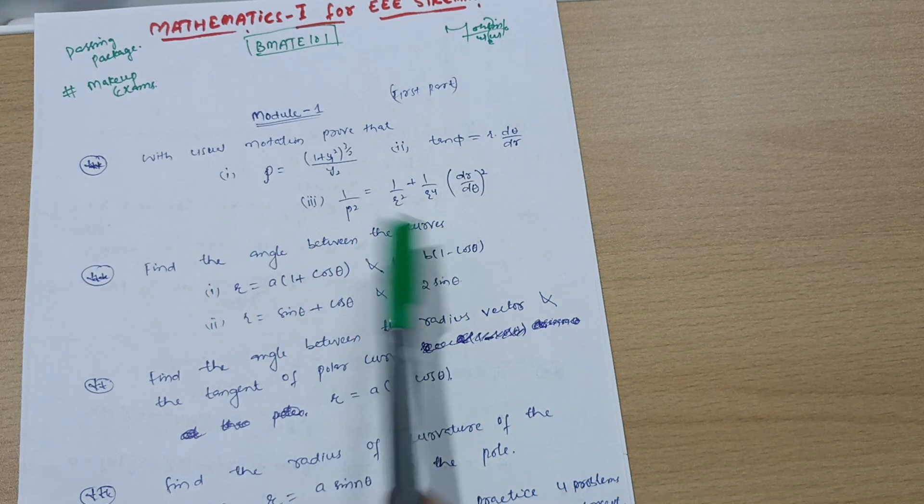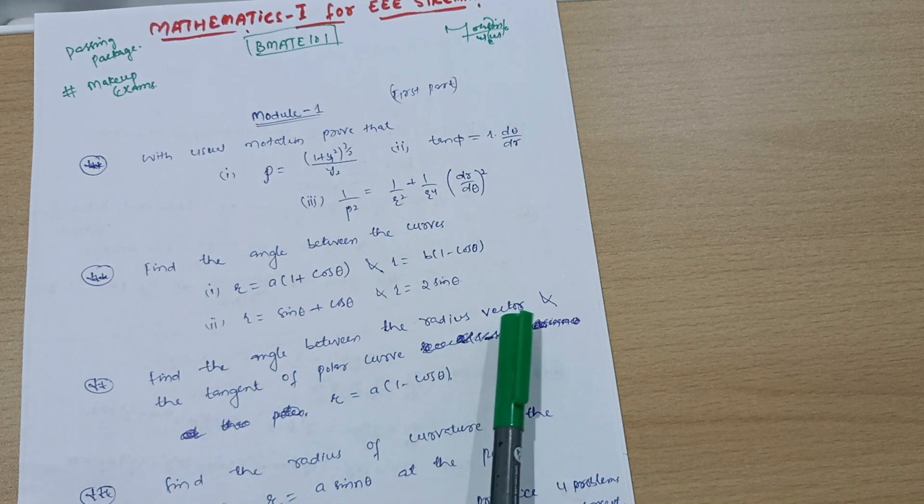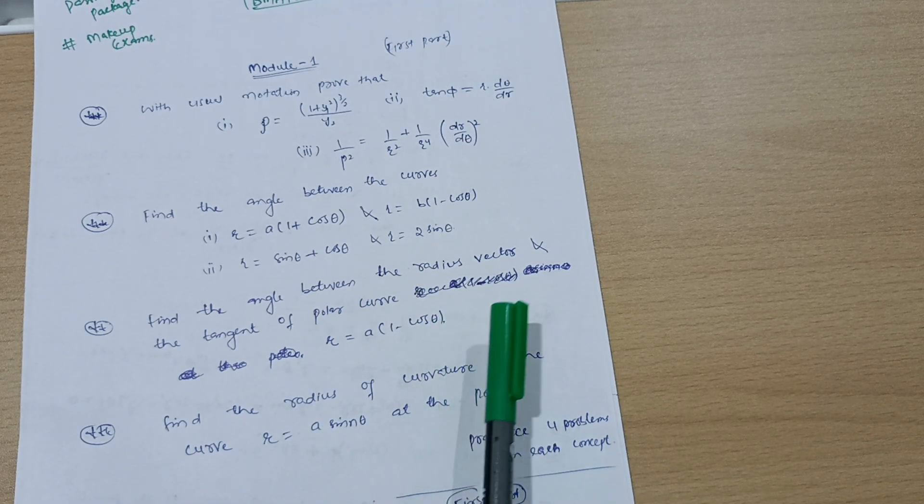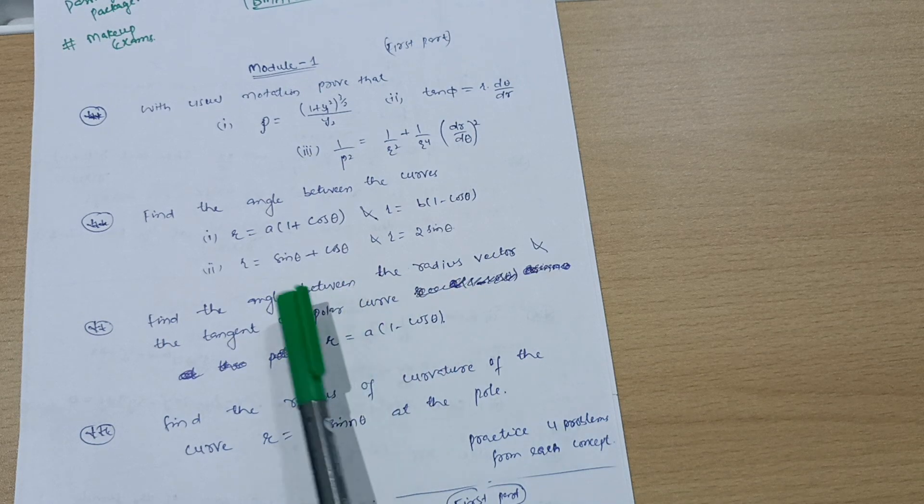Find the angle between the radius vector and tangent of polar curve r equals a times 1 minus cos theta. Also three problems from this concept, angle between radius vector and tangent of polar curve.